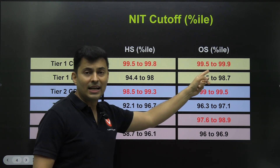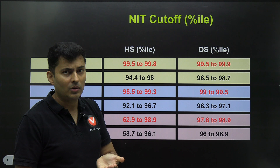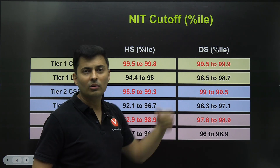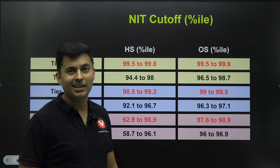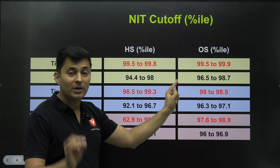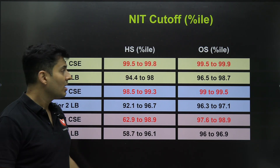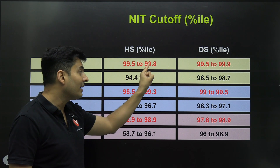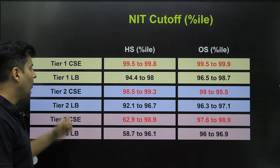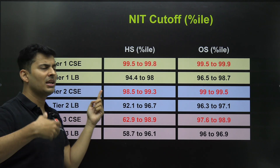For outside state — say you're aiming for NIT Trichi which is in Tamil Nadu but you are from Maharashtra — you will have to get around this much percentile as well. You can see both these numbers are well above 99 percentile, not even 99.1. It is 99.5 to 99.8 — that is the level of percentiles required.